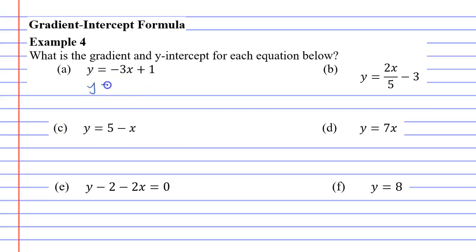For instance, question A is really simple. m is the number in front of x, or the gradient, so the gradient's negative 3, and the y-intercept in this case would be 1, which is b.